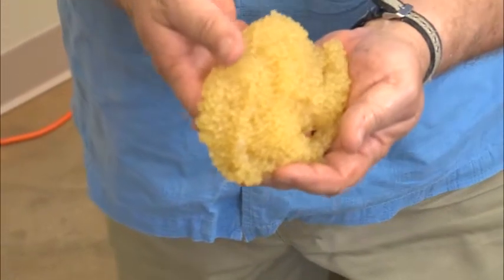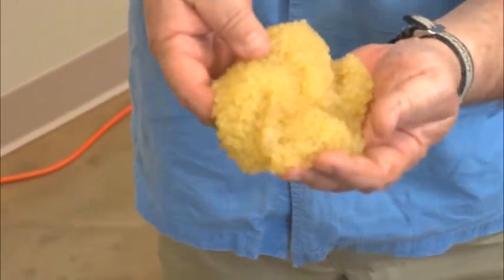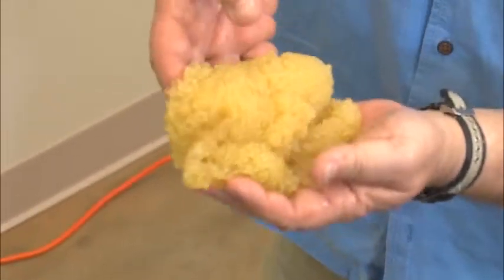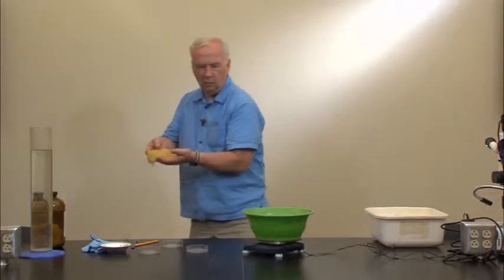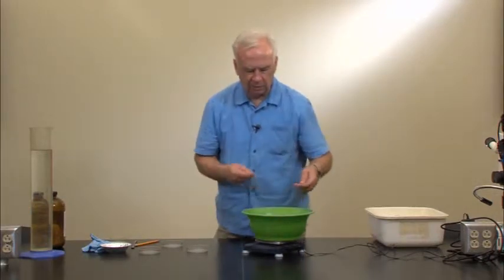To get a fair weight, we want to pick up the egg mass, let any excess water drip off, and then we'll get a weight of the entire egg mass.